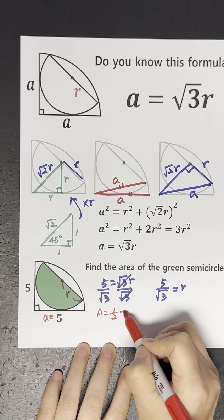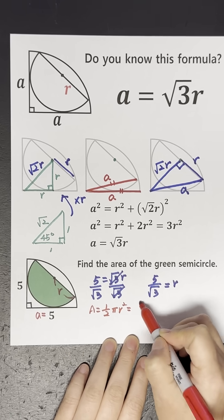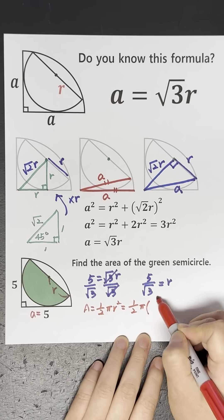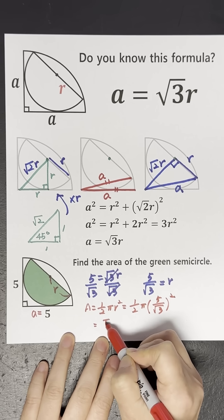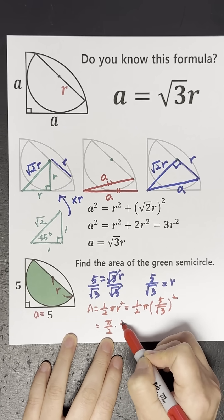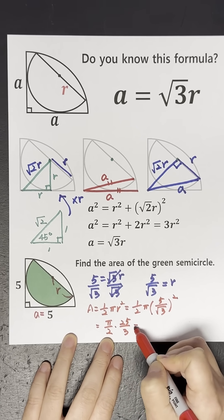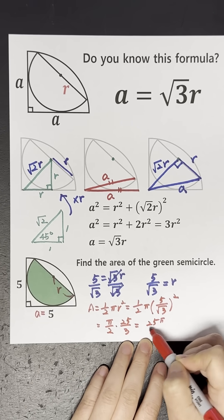Area is 1 over 2 pi times 5 over square root 3 squared, which is 25 pi over 6.